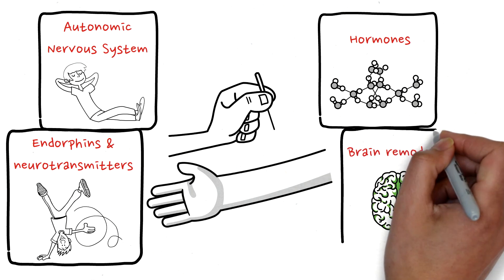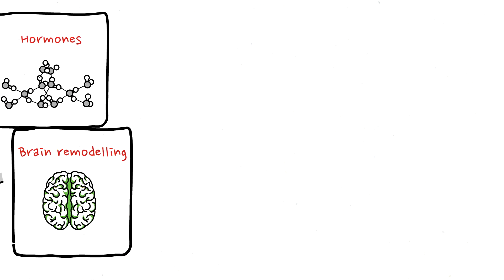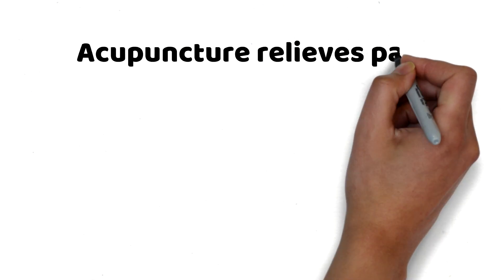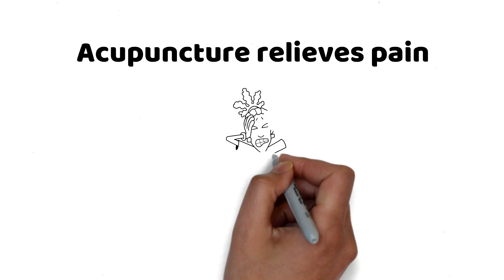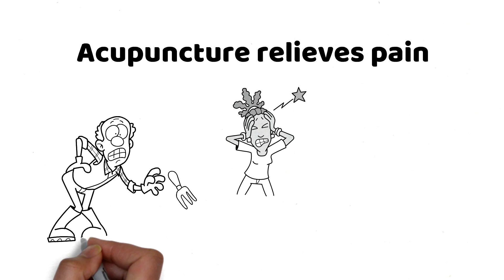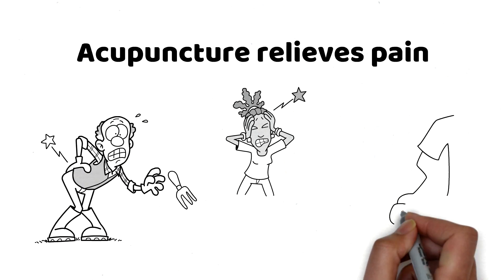So, what does this mean for our health? Let's explore some evidence-based findings. Acupuncture is well known for its pain-relieving effects. By stimulating specific points, it releases endorphins and neurotransmitters that block pain signals, reduce inflammation, and promote circulation.